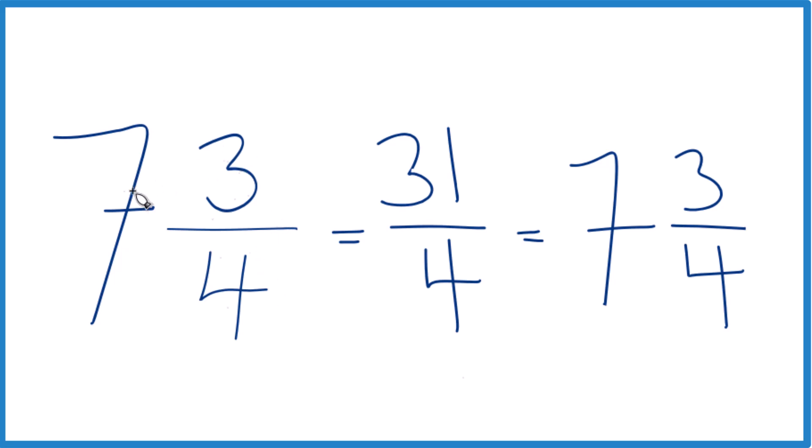It's Dr. B writing 7 and 3 fourths, the mixed number, as an improper fraction. The answer is 31 fourths. Thanks for watching.